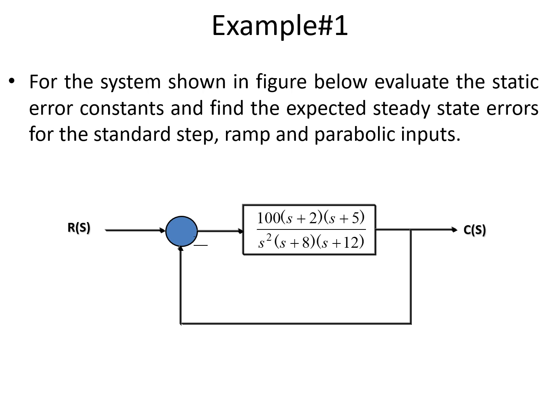Now let us take an example to understand how to find the error constant values for a given open loop transfer function. In the question, a block diagram is given with an open loop transfer function. We are supposed to evaluate the static error constants and the expected steady state error for the three inputs — step, ramp, and parabolic.